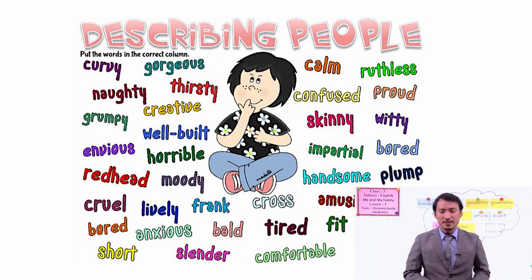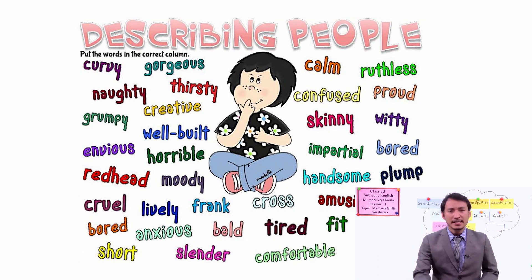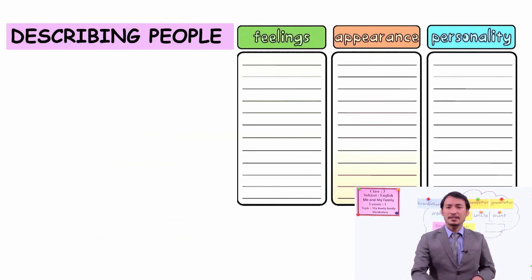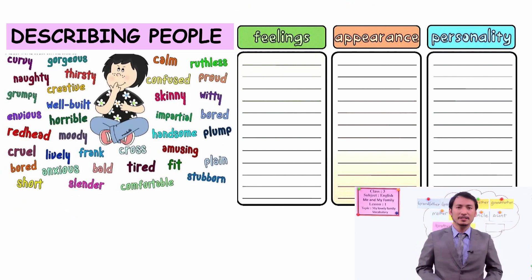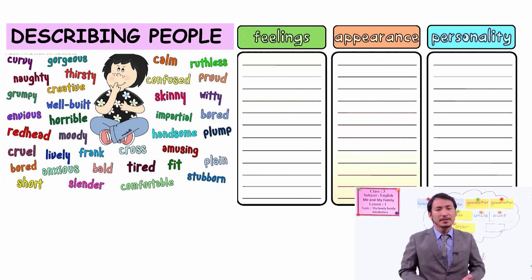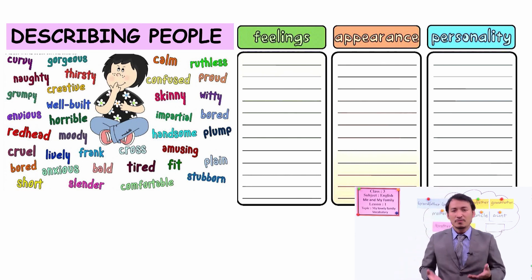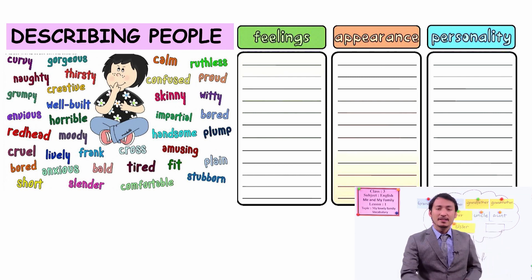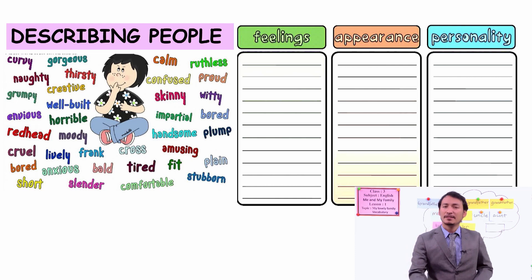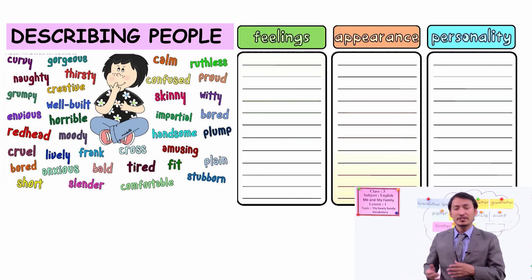You can use these words to describe. Let me show you how to understand these words. There are certain words we can use. For example, if you are feeling something, you can describe your feeling as well. What are those feeling words? Let me show you some examples of feeling words, appearance words, and personality words.